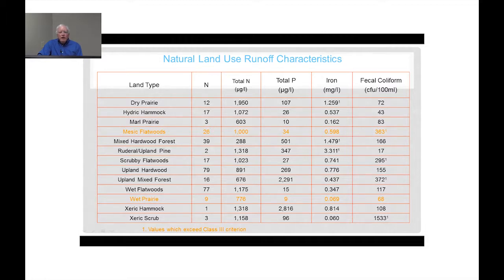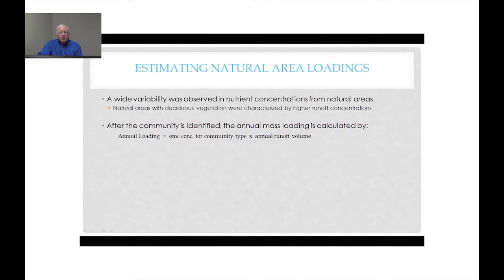To estimate natural area loadings, you do it similarly to estimating loadings from urban areas: take an EMC value for your community type, multiply it by the annual runoff volume, and you get your annual loading.